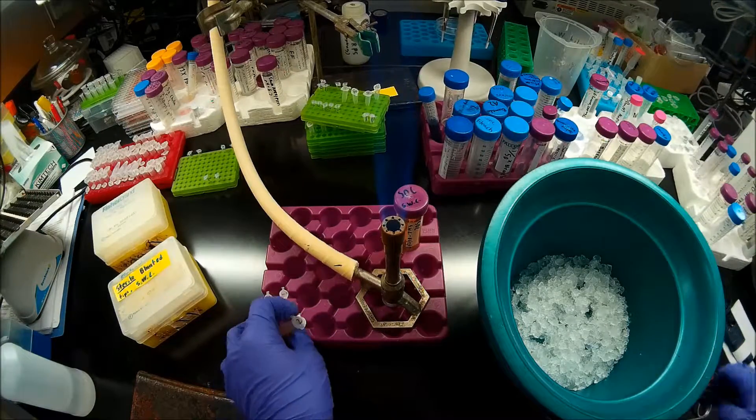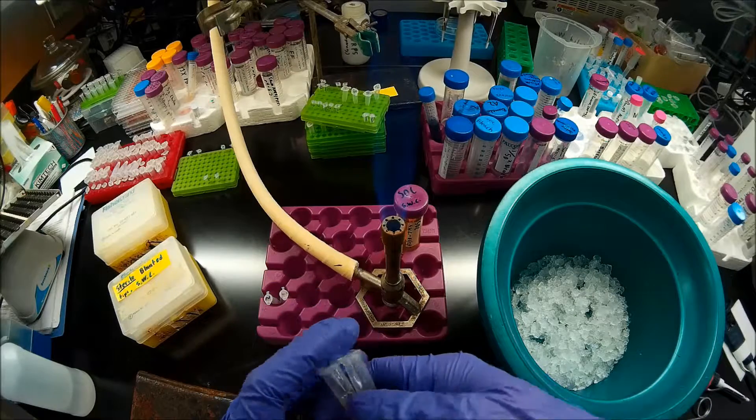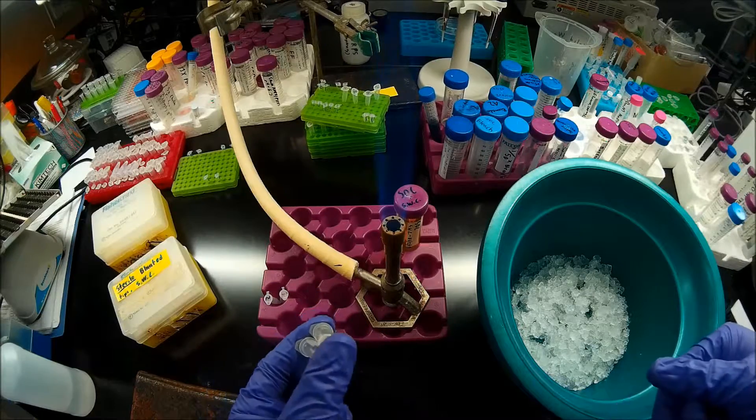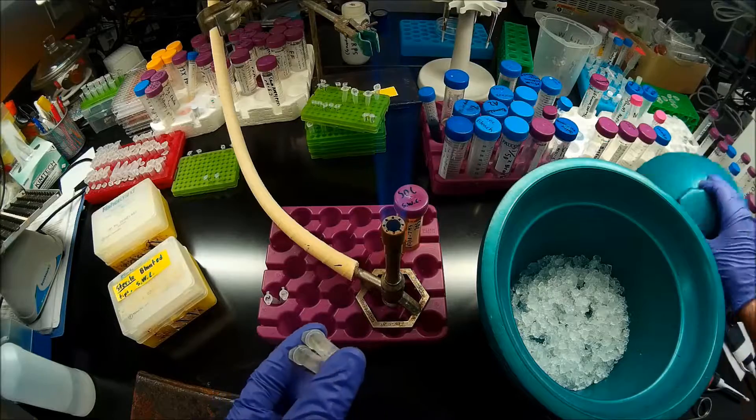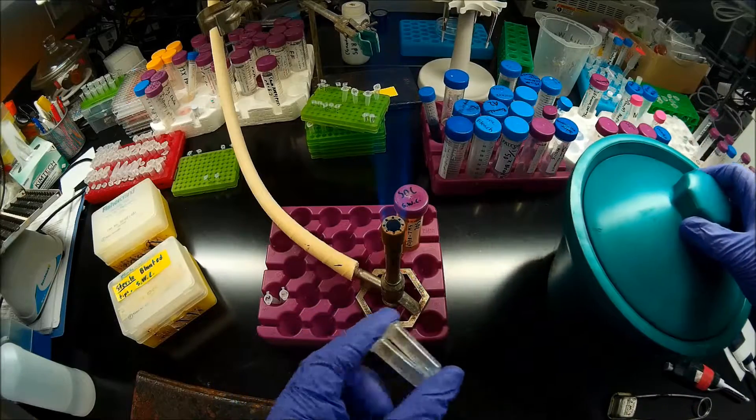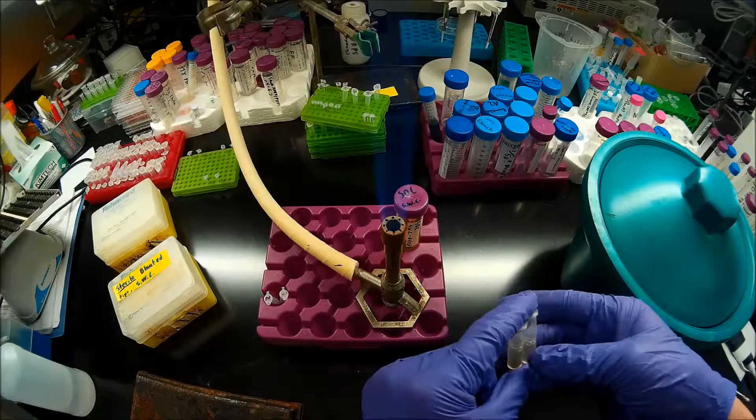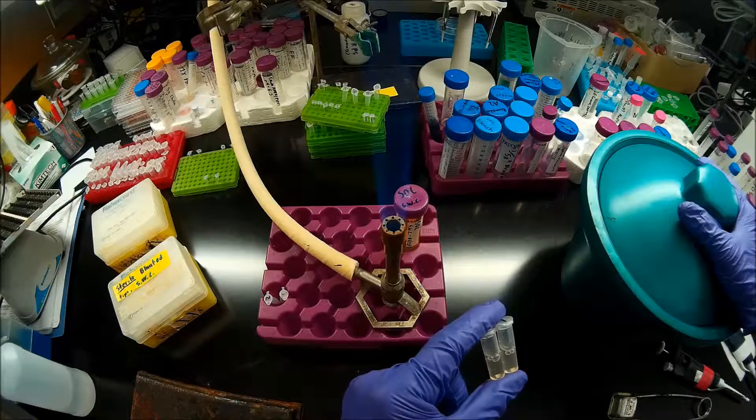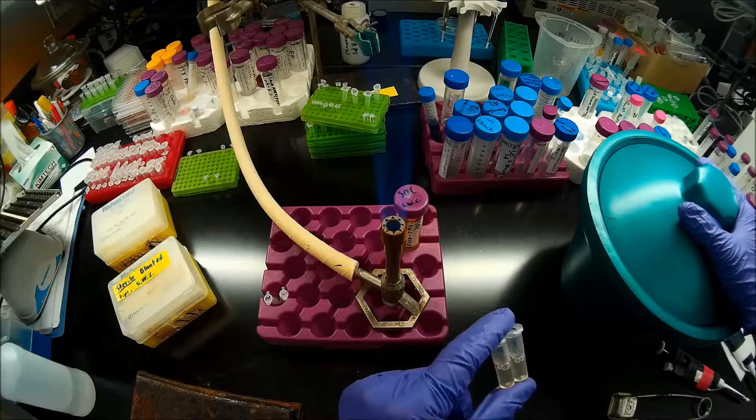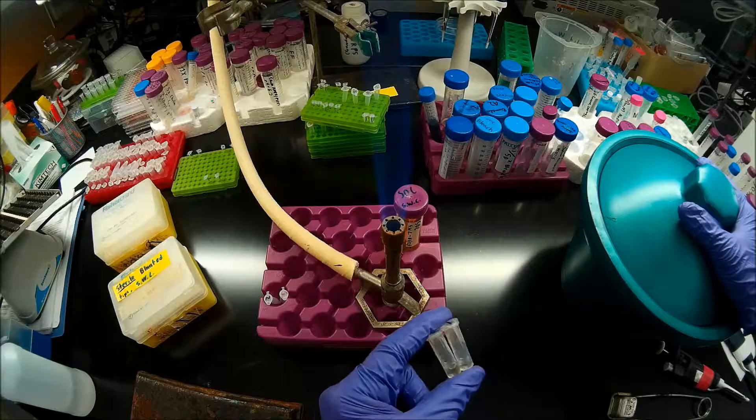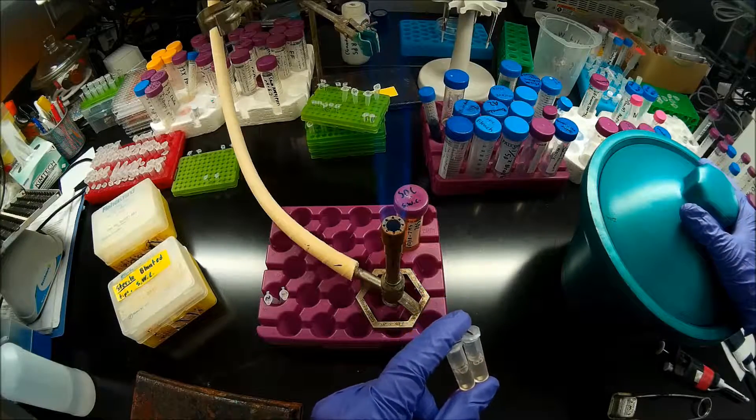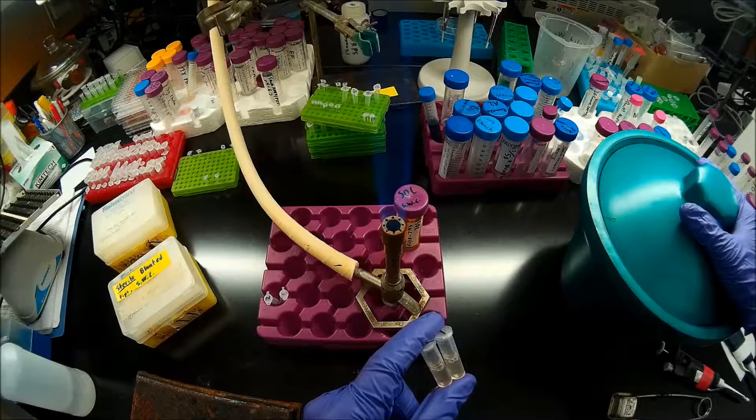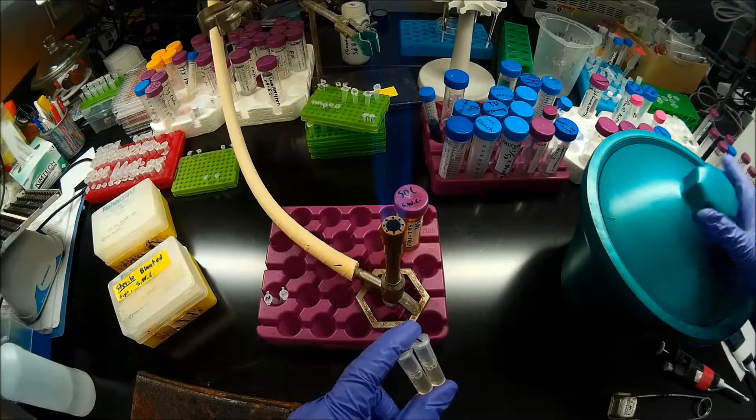So now I'm going to take these 2 tubes, and I'm going to put them on a rocker plate in the 37 degree incubator for about 20 minutes. We don't need to do a particularly long recovery step since the plasmid I'm transforming with is ampicillin, and that's a bacteriostatic antibiotic, not a bactericidal one. So I'm going to put these for a 20 minute recovery step before I spread them on plates.